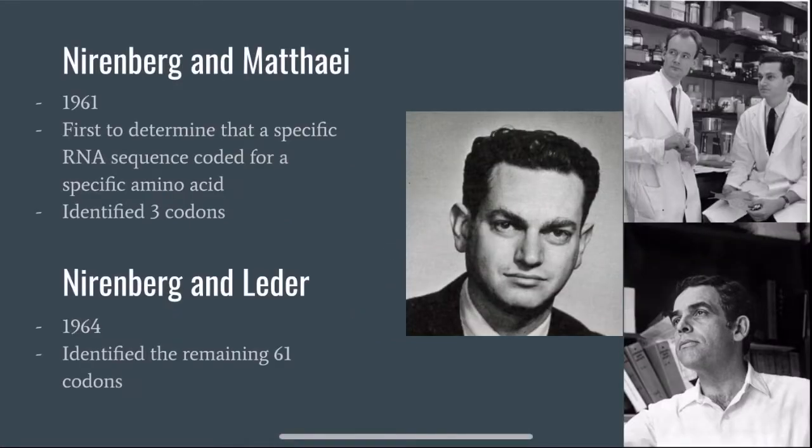There were three main scientists that participated in discovering the genetic code, and they all had their own contributions: Nirenberg, Matthaei, and Leder. Nirenberg and Matthaei were the first to determine that a specific RNA sequence coded for a specific amino acid. They were able to identify three codons.